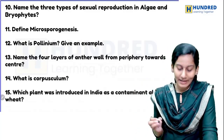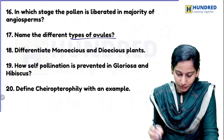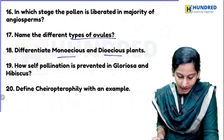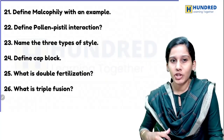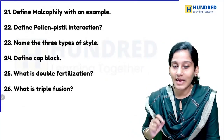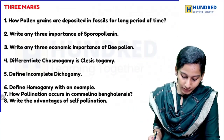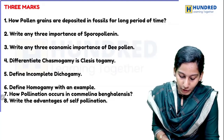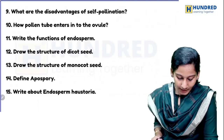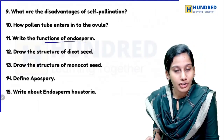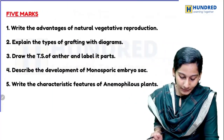Topics include pollinium, anther wall, corpusculum, types of ovules, monoecious and dioecious plants. For pollination, extra pollination is a three-mark question. Questions are in different patterns. What is cleistogamy, chasmogamy — those are three-mark questions. Endosperm functions are three marks; types of endosperm are five marks.